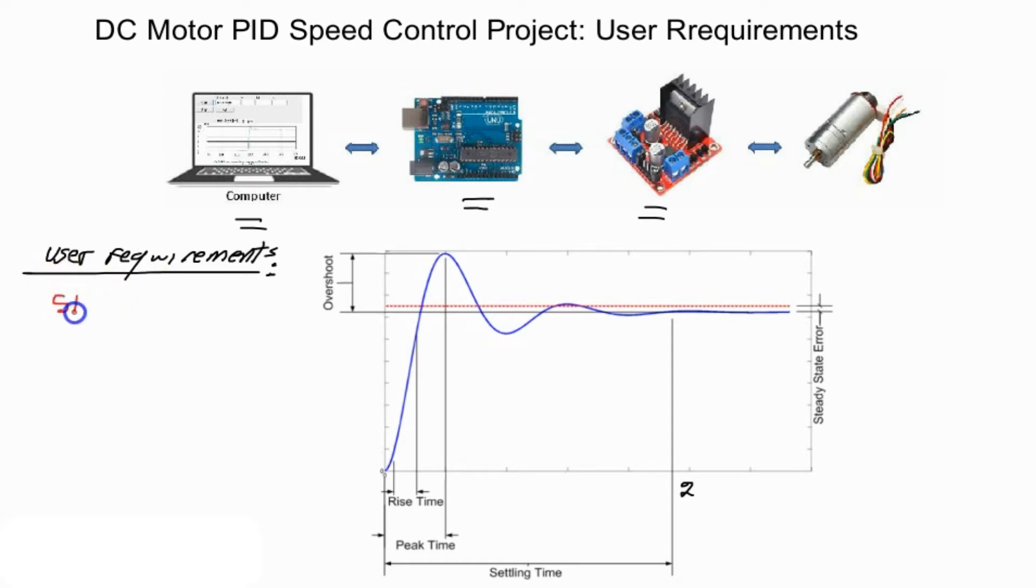For a step input of say 50 rounds per minute, we need the DC motor behavior response to be bounded by the following design criteria.